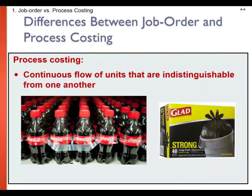In job order costing, we were looking at very different, unique jobs or products worked on within a period — like a film, building a cruise ship, or very custom-made furniture. They were unique, different jobs that we could assign costs to. In contrast, process costing is more used in industries that convert raw materials into homogenous, uniform products produced in a continuous flow of units — indistinguishable from one another, like Coca-Cola or garbage bags. It would be very difficult and nearly impossible to assign a work in process account for every bottle of Coke produced.